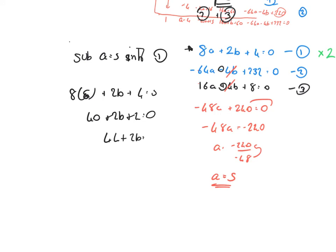44 plus 2b equals 0. Bring that over. 2b is equal to minus 44. b is equal to minus 44 divided by 2. And b is equal to minus 22. Final answer.